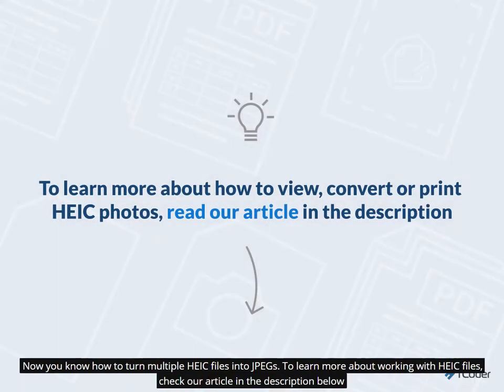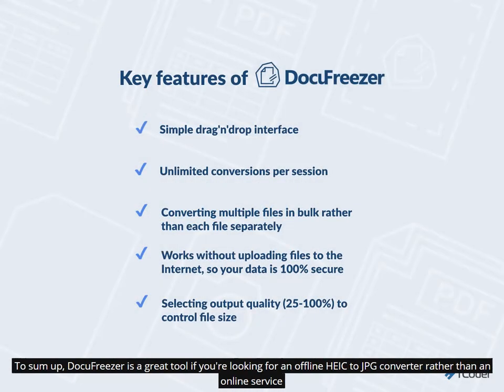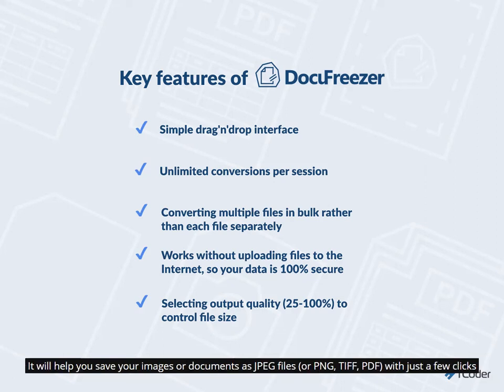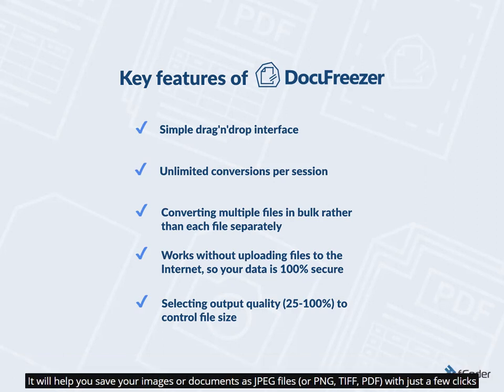Now you know how to turn multiple HEIC files into JPEGs. To learn more about working with HEIC files, check our article in the description below. To sum up, Docufreezer is a great tool if you're looking for an offline HEIC to JPG converter rather than an online service. It will help you save your images or documents as JPEG, PNG, TIFF, or PDF files with just a few clicks.